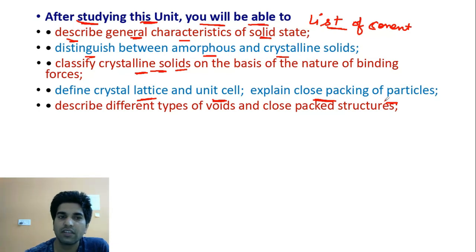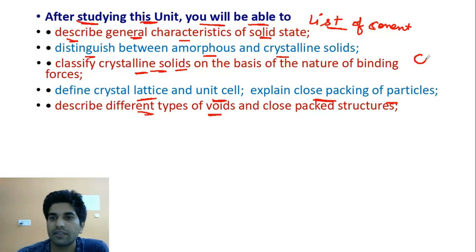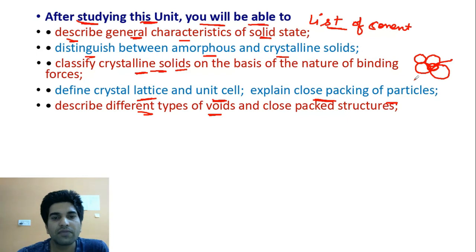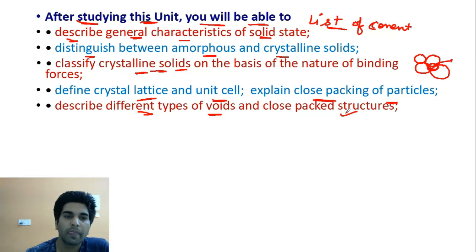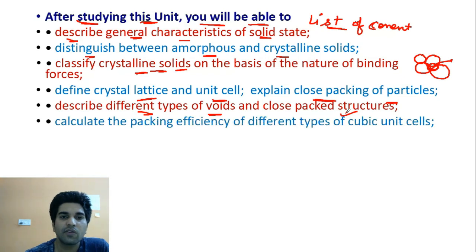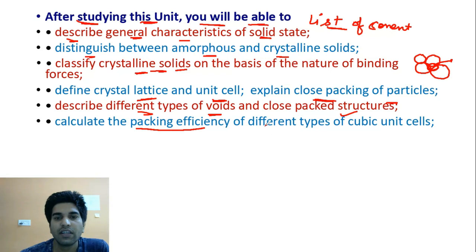The next topic is: describe different types of voids and close-packed structures. Voids are vacant spaces — like when I am packing particles, some empty space remains, and that is known as a void. We have to describe different types of voids and close-packed structures in this topic.